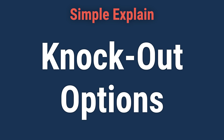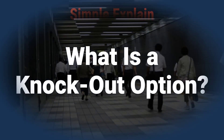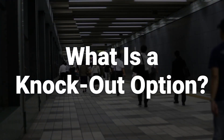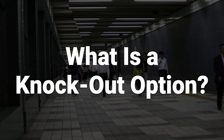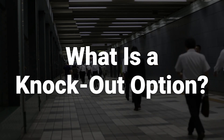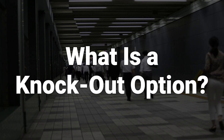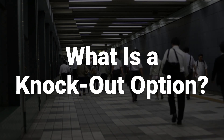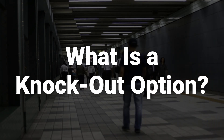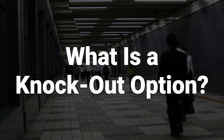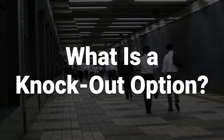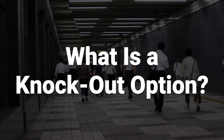Today, we will talk about knockout options. Let's learn what they are and how they work. A knockout option is an option with a built-in mechanism to expire worthless if a specified price level in the underlying asset is reached. This sets a cap on the level an option can reach in the holder's favor. Knockout options limit the profit potential for the option buyer, so they can be purchased for a smaller premium than an equivalent option without a knockout stipulation.